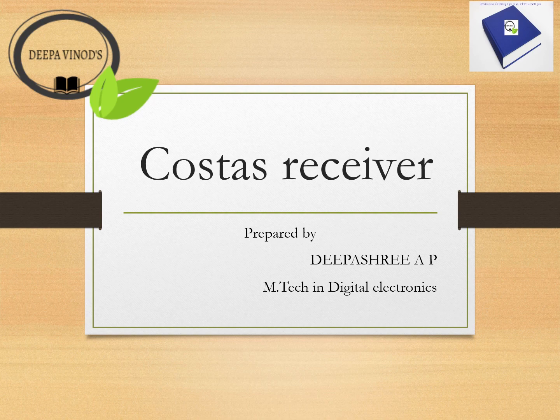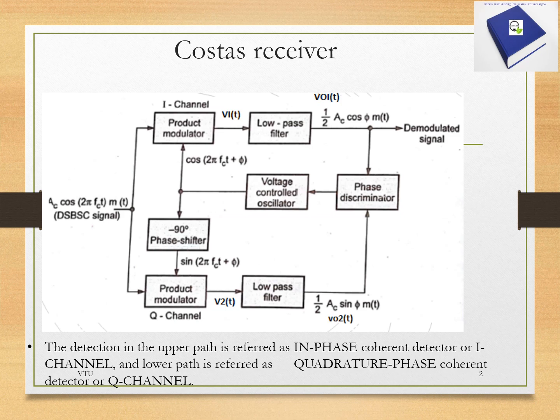The basic principle of operation of the Costas receiver is that the two detectors together form a negative feedback system. It consists of two detectors: the I channel and the Q channel. Together they form a negative feedback system.